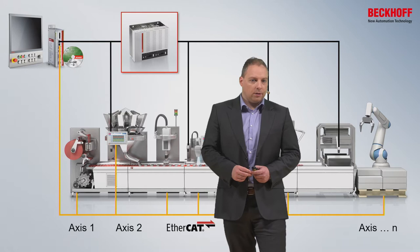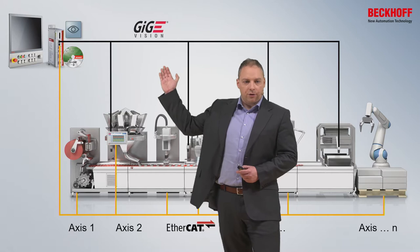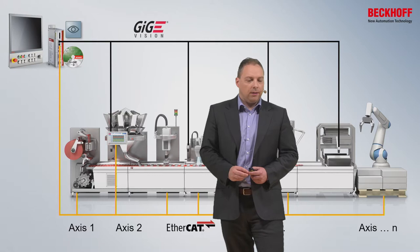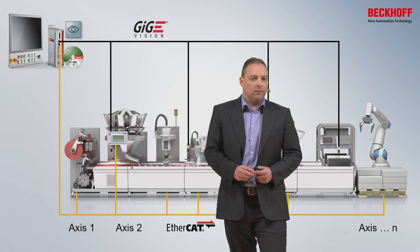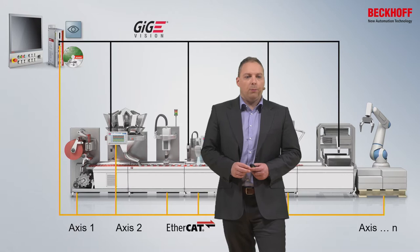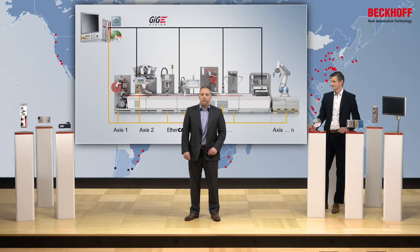If we now take a look at TwinCAT Vision, we see that we have the system fully integrated. The cameras all connect to one machine PC and it's no longer necessary to have intelligent cameras. In this case we have no interfaces, and it's possible to program everything in one development environment. The same programmer who sets up the axes can now add the cameras and add the analysis steps to the PLC. Overall we save time, which can lead to higher cycle rates or shorter machine lengths.